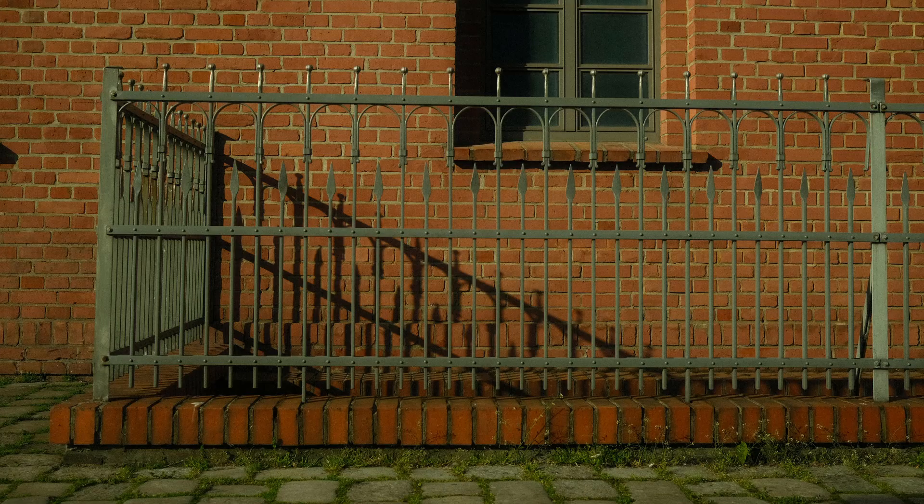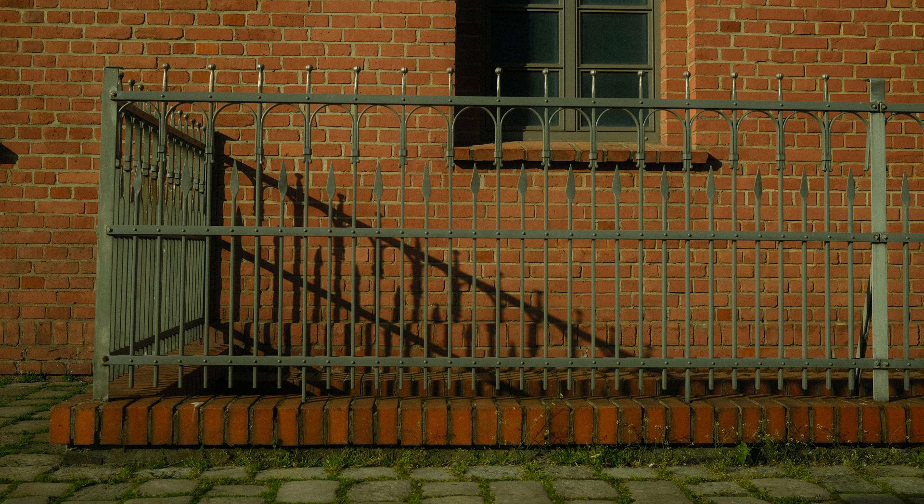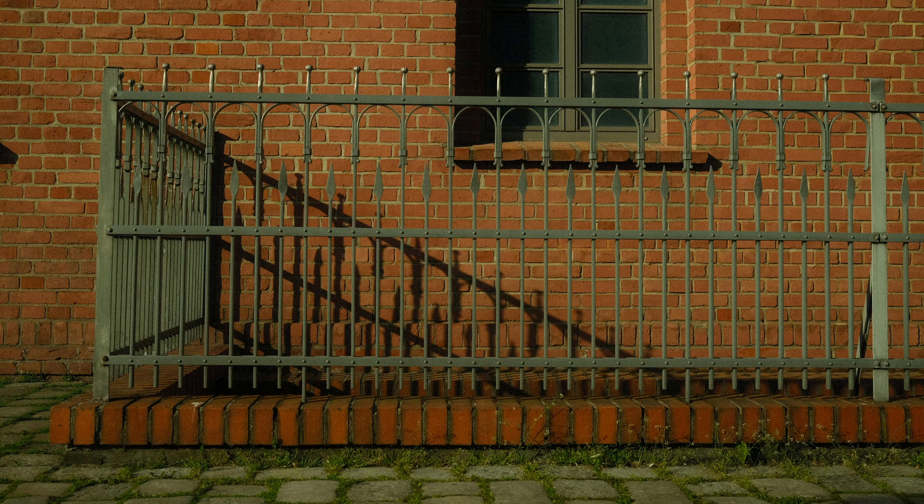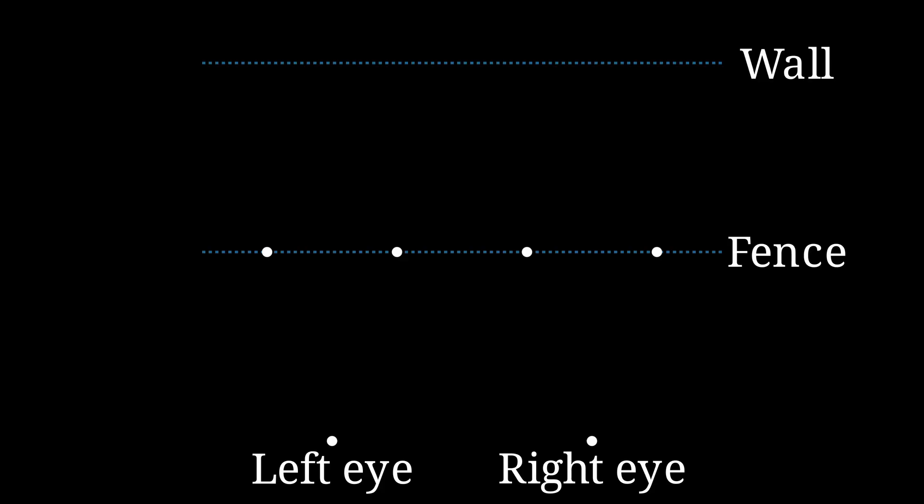But that's a dual-image stereogram. We're interested in single-image stereograms, autostereograms. How can we create the same illusion when both eyes are seeing exactly the same image? Suppose you're looking at a wall that's behind an iron fence. If the geometry is just right, the fence can appear further away than it really is. There's always some part of the wall that your left eye can't see because it's behind a fence post, and if it just so happens that your right eye can't see it either because it's behind another, identical fence post, then your brain's not going to figure that out.